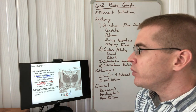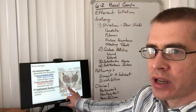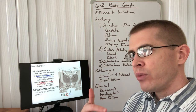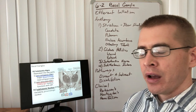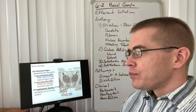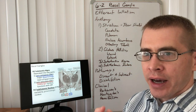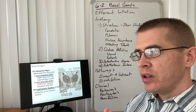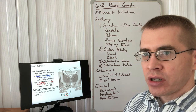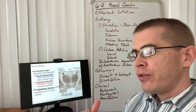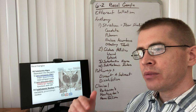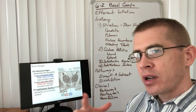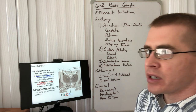Moving even more caudally, we see the last two portions of the basal ganglia: the substantia nigra and the subthalamic nucleus. The substantia nigra has two nuclei. The dopaminergic neurons are located in the pars compacta, which is more dorsal and superior. The substantia nigra pars reticulata is an inhibitory projection that functions very closely with the GPi — so if something's targeting the GPi, it's likely targeting the SNr as well. The subthalamic nucleus is an excitatory nucleus.